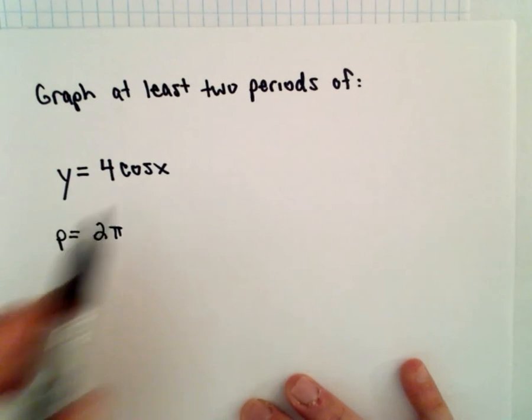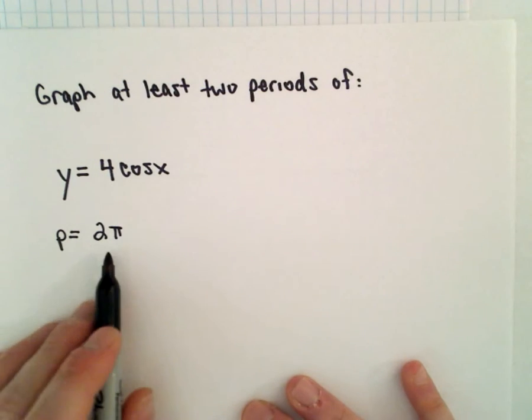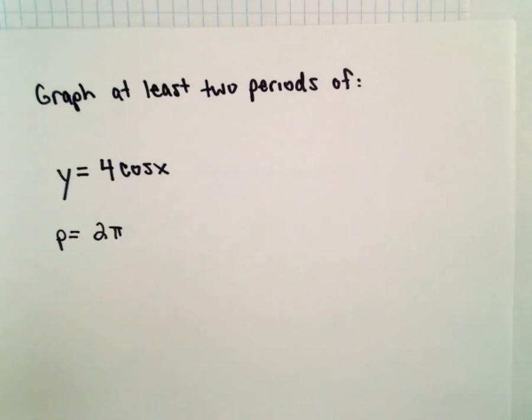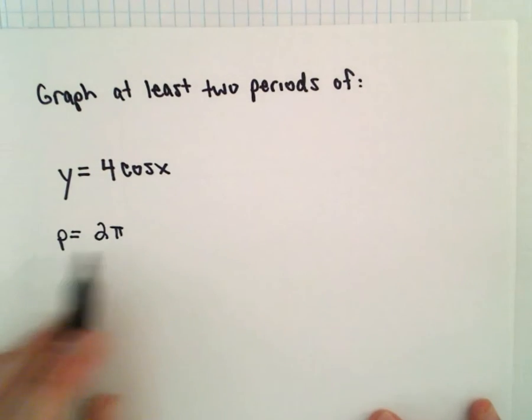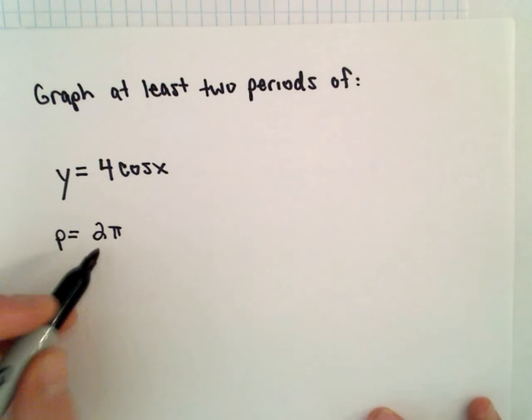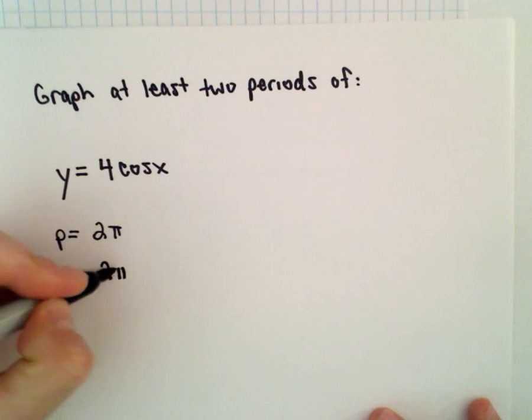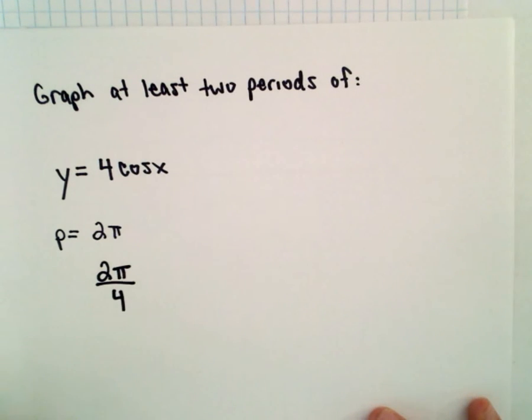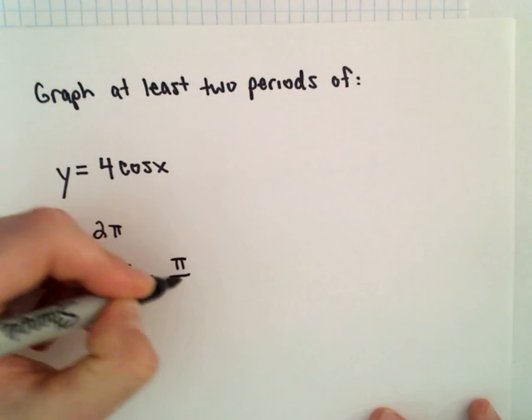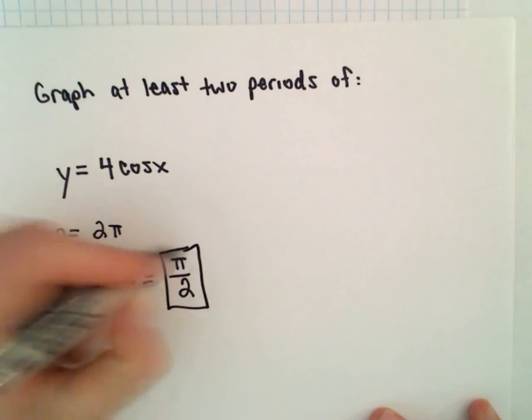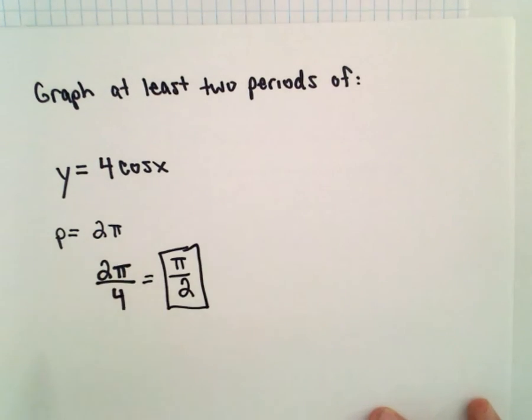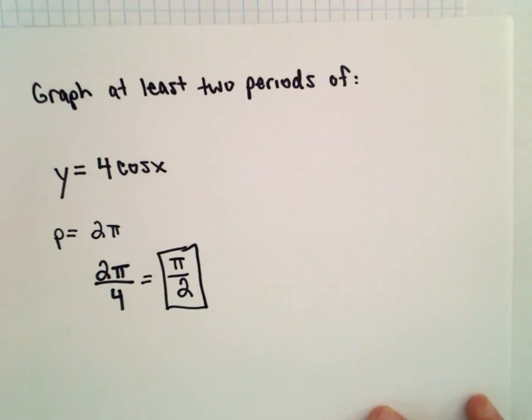What I like to do when I graph trig functions is, for sine and cosine, I like to find the period and then divide that into four equal parts. Two pi divided by four will equal pi over two, and I use these values as my increments when I mark values on the x-axis.